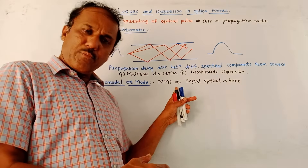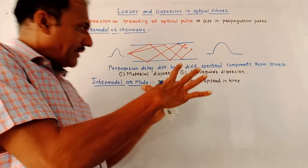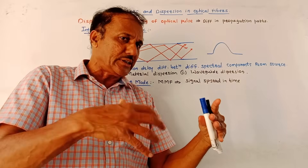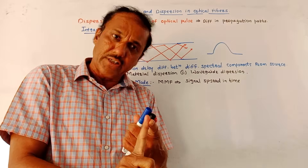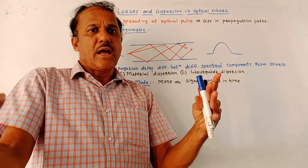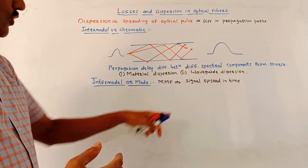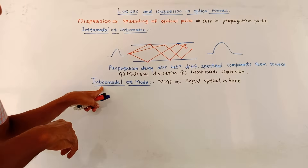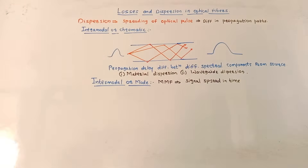Next is intermodal or modal dispersion, which occurs in multimode fiber optic cables. Different wavelengths follow different propagation paths and have different velocities, so they do not all reach the output at the same time. This causes broadening of the output pulse — the signal is spread in time — which is referred to as intermodal or modal dispersion.